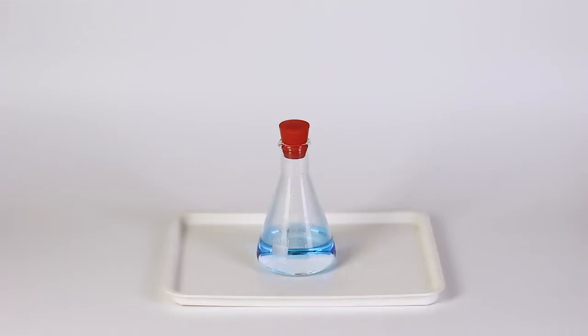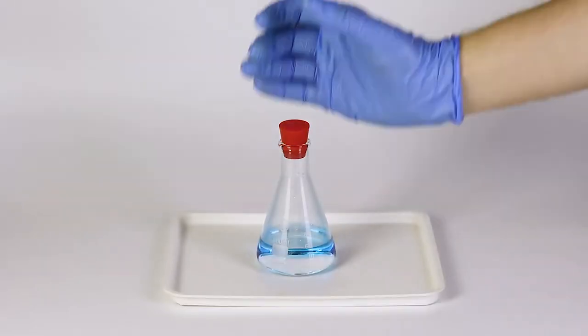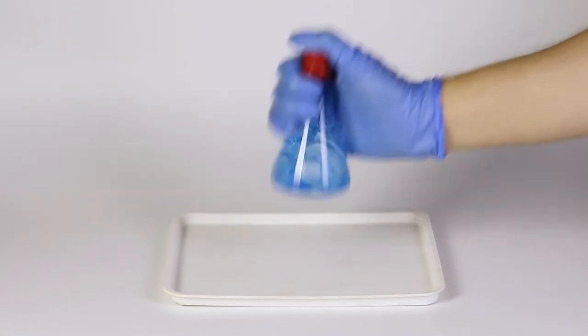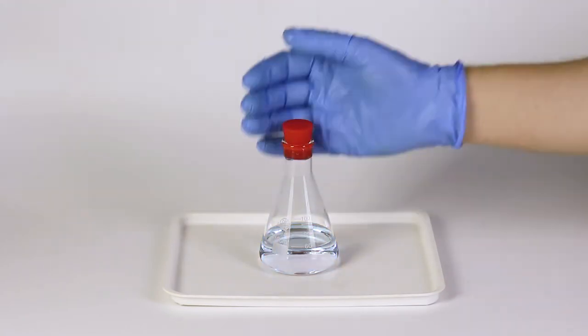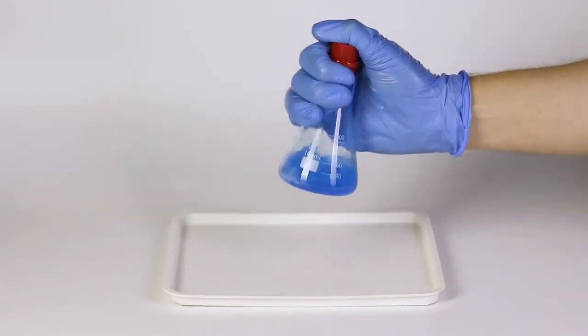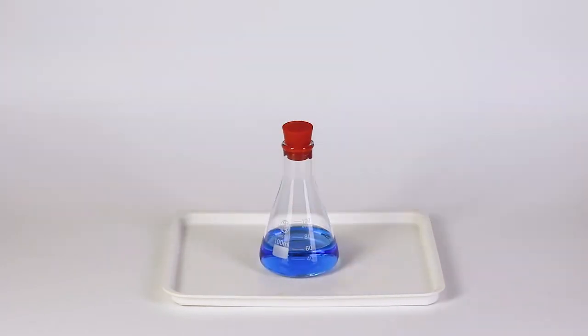When the solution turns colorless, thoroughly shake the flask and the solution will turn blue again. If the flask is left for a while, the liquid will once again turn colorless, and when shaken again, it turns blue.